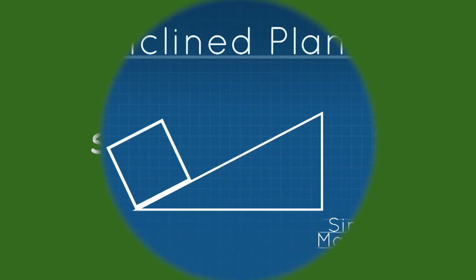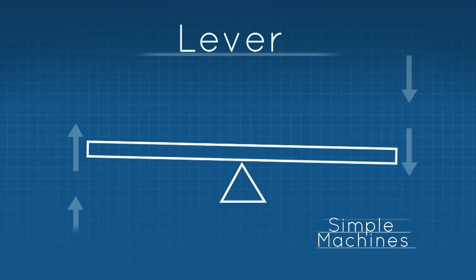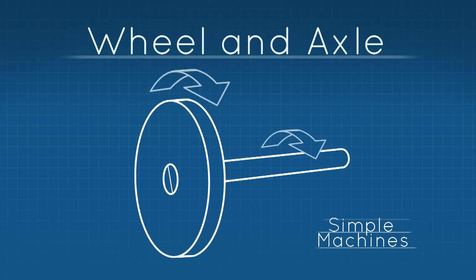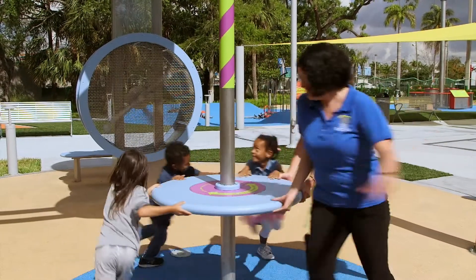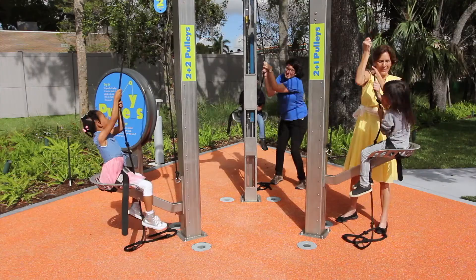Simple machines. Simple machines are tools with few moving parts that help people do work. Simple machines help us push, pull, lift, and move things.